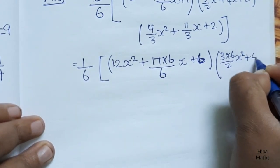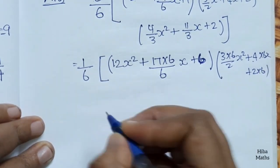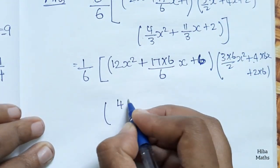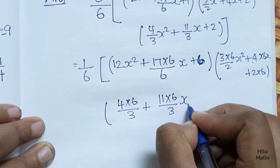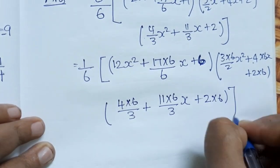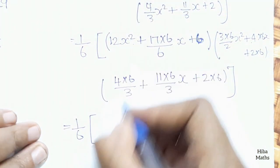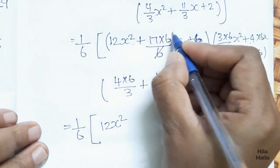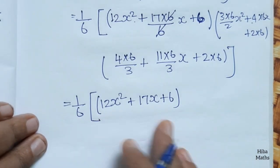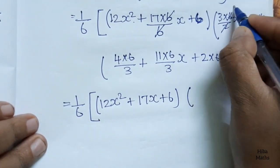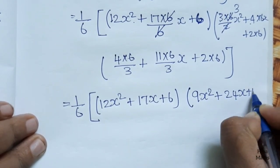Multiply each term by 6: for the first expression, 17 times 6 divided by 6 cancels giving 12x² plus 17x plus 6. For the second expression, 3 times 6 by 2 gives 9x² plus 24x plus 12. For the third expression, 4 times 6 by 3 plus 11 times 6 by 3 gives the simplified quadratic.